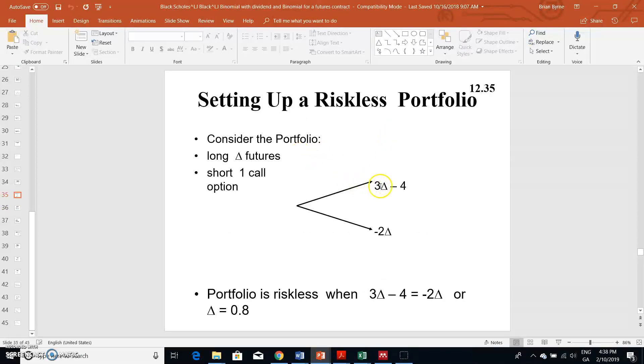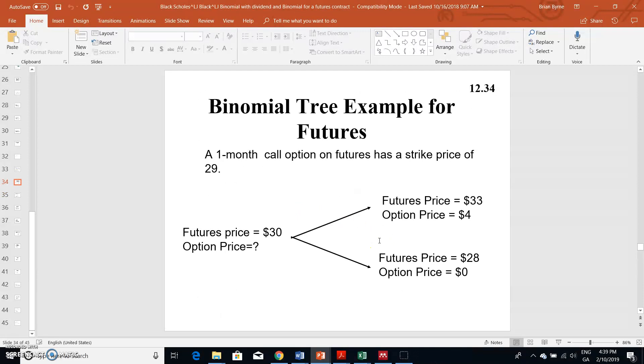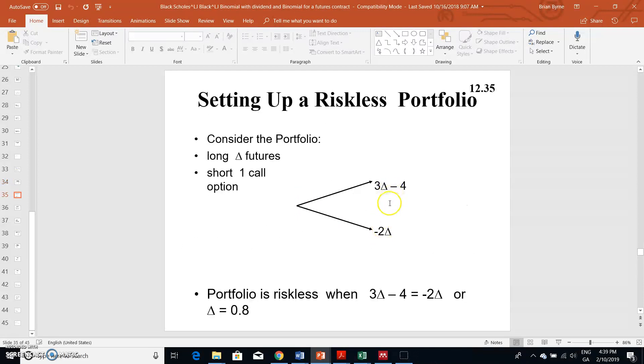To perform delta hedging using futures, we multiply the change in the futures position by delta, then add the value of the option itself. We create a riskless portfolio by imposing risk neutrality, making the two outcomes equal whether the futures price goes up or down.